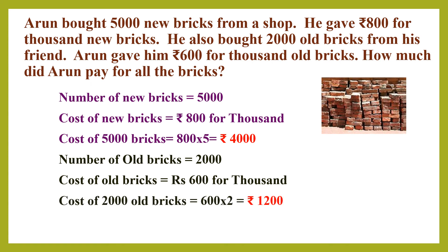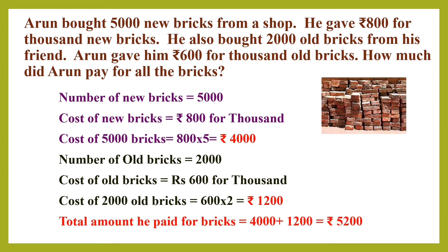Now how will you find the total amount paid for old and new bricks together? Just add both the amounts. 4000 plus 1200 will give you 5200. So Arun paid 5200 rupees for all the bricks.